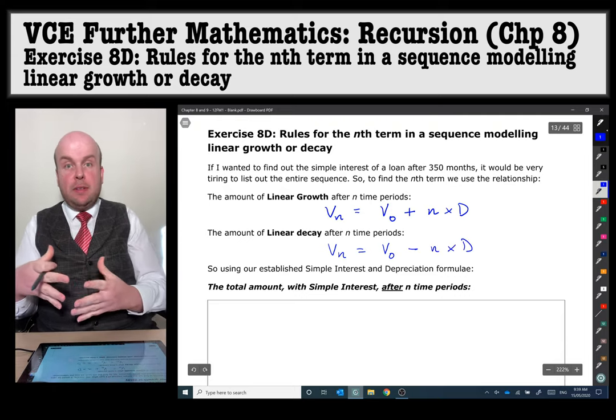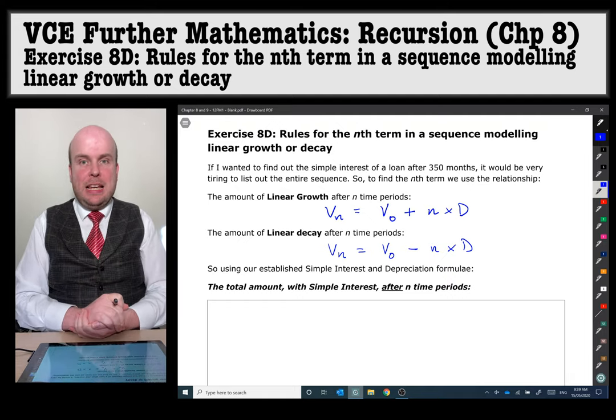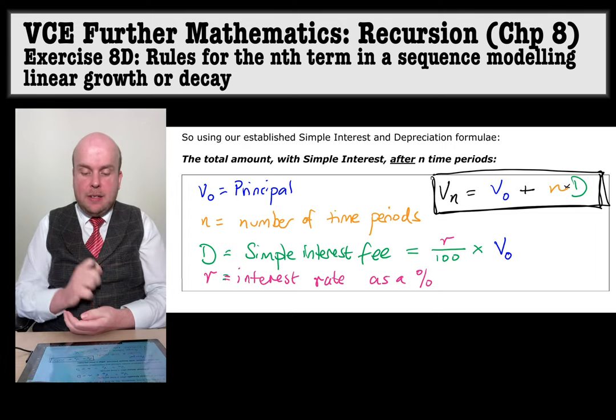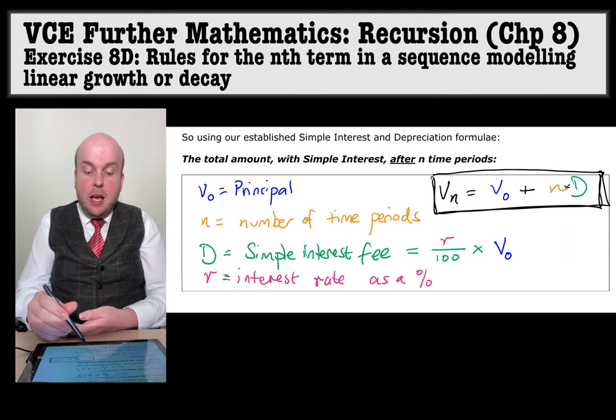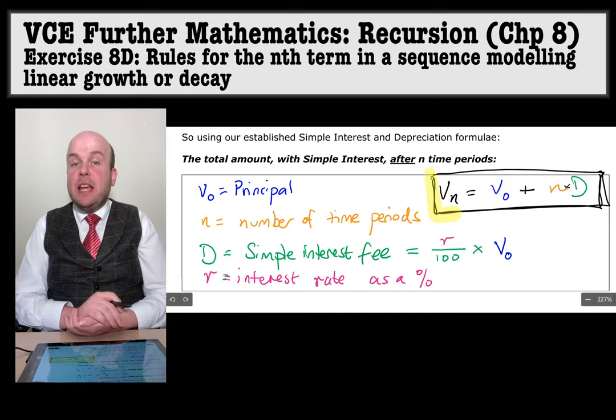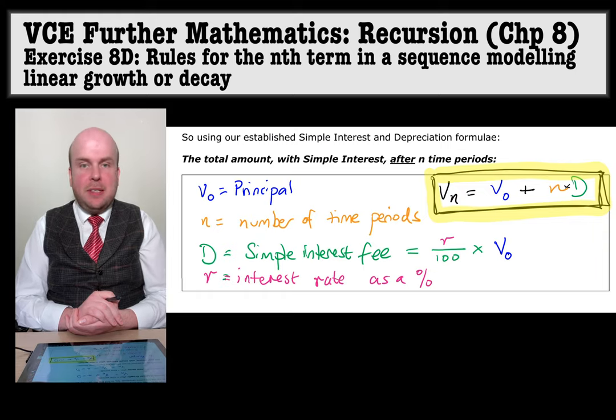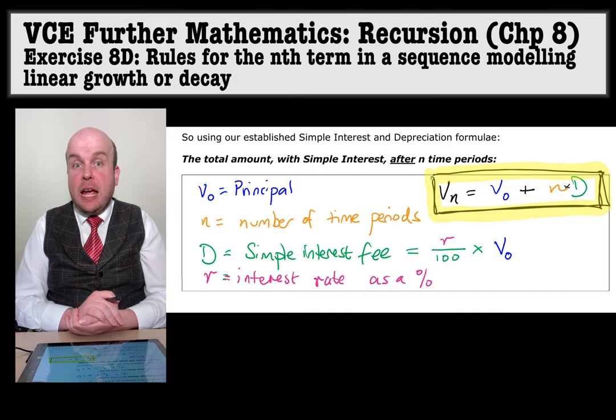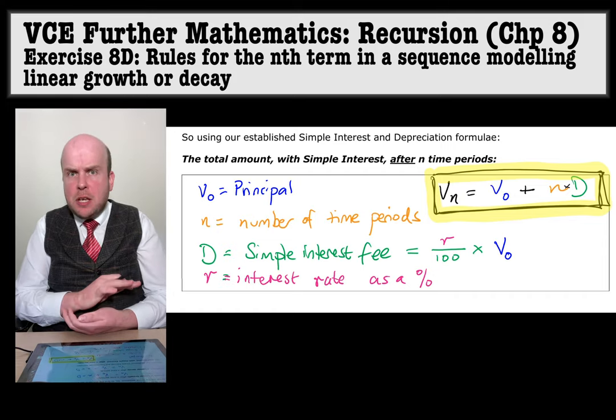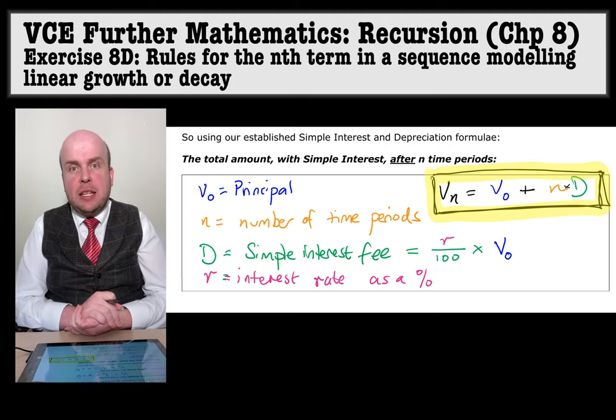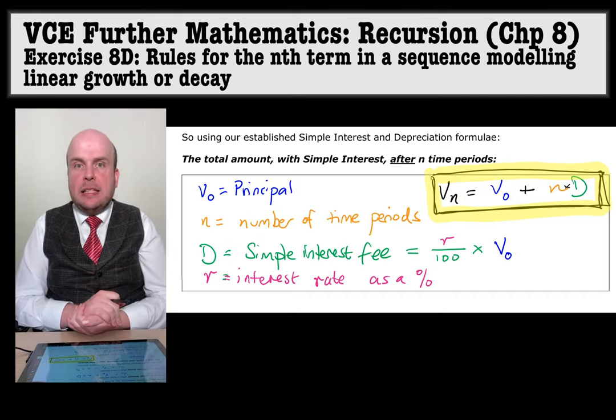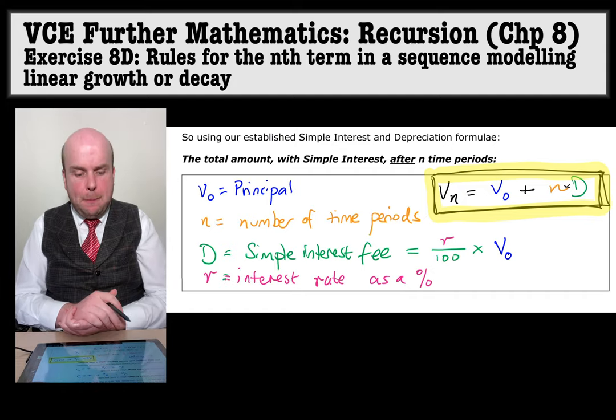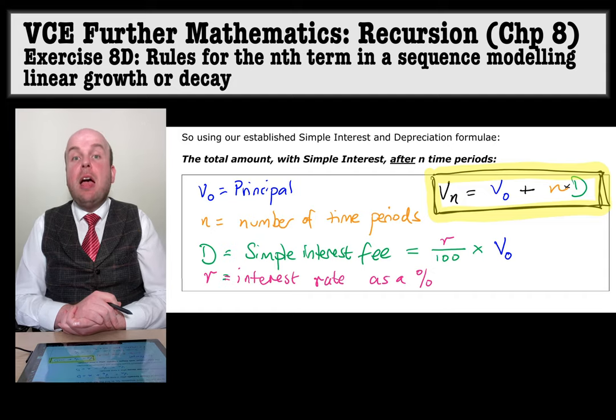The total amount with simple interest after n time periods. When we're wanting to find the total amount after we've invested some money using a simple interest fee we use this formula here. So that's Vn equals V0 plus n times d. V0 is the principal or the original amount that I invested in. N is the number of time periods. D is the simple interest fee. What that is is the interest rate, that is the little r divided by 100 times by the principal.